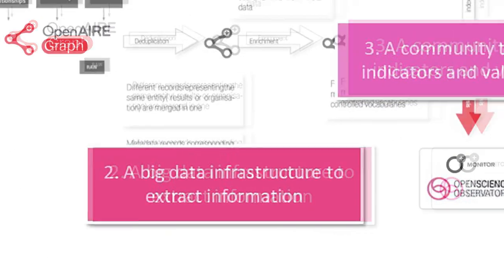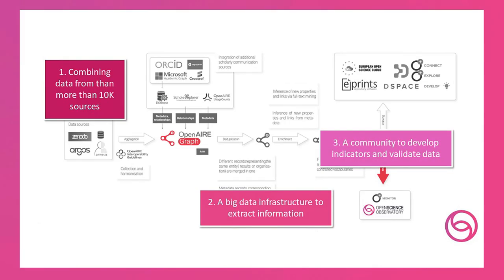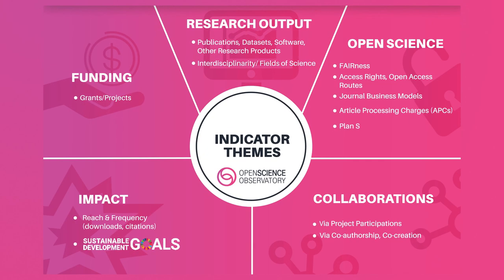Open Science Observatory is accessible openly on the web. It offers a rich set of open science indicators tracking open access research activities. The indicators are shaped together with a community to ensure quality and relevance.